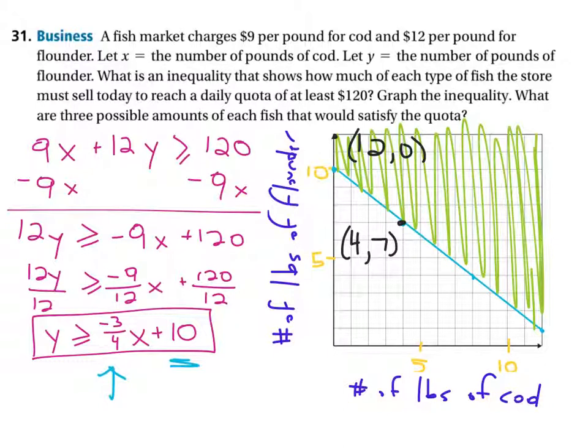And let's just pick this random point here. Six, I'm sorry, 10 cod and six flounder. That would exceed your quota. Any points that you pick that are either on the line, if you're allowed to include the line, and in this case we are, because it says our equals, or above the line in the shaded area, will satisfy the quota. And that's what it's asking. What are three possible amounts of each fish that would satisfy the quota?